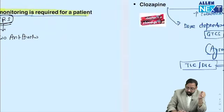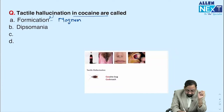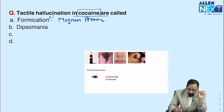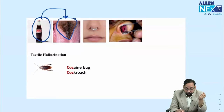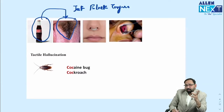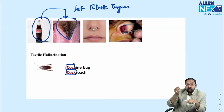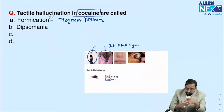Next: tactile hallucination in cocaine use is also called formication or Magnum phenomena. Remember cocaine as coca-cola — if you drink coca-cola frequently, your tongue becomes dark brown. A question was asked that cocaine causes a jet-black tongue. If a patient is taking cocaine, they may feel insects crawling under the skin — tactile hallucination, also called cocaine bug, formication, or Magnum phenomena.